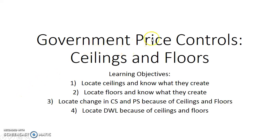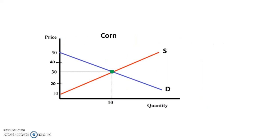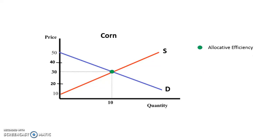When I call this a government price control, what I mean is that the government is establishing the price and it is not set at equilibrium. On our standard supply and demand graph — using corn as our example — we can see that equilibrium is set at a quantity of 10 and a price of 30. This green dot is known as allocative efficiency, which is producing the right mix of goods or what society wants — where quantity supplied equals quantity demanded.